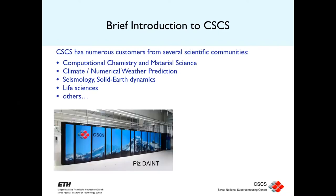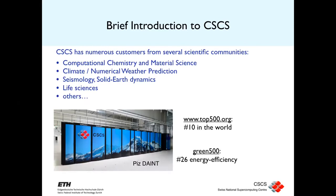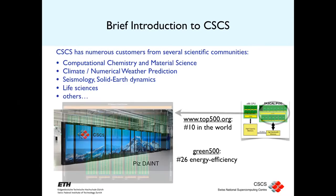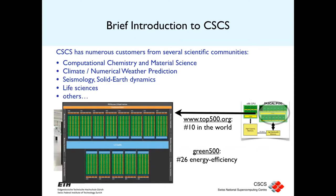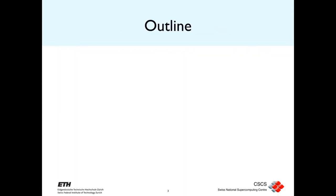We have a very big machine called Piz Daint, which has already been mentioned. It is currently number 10 in the world on the Top500 list and number 26 on the Green500 list. Its nodes consist of one Haswell CPU and one NVIDIA Pascal P100. GPUs consist of many tiny cores and attempt to do single instruction multiple data or multiple thread parallelization.